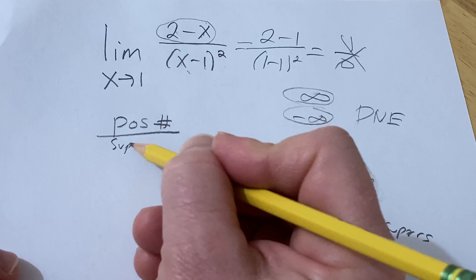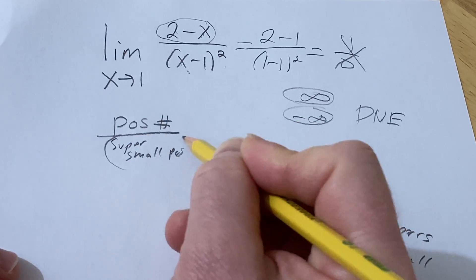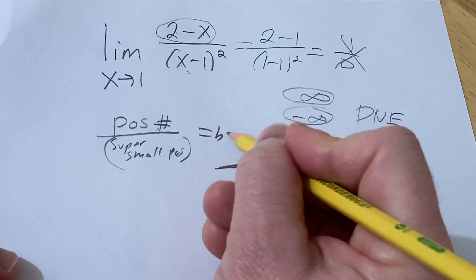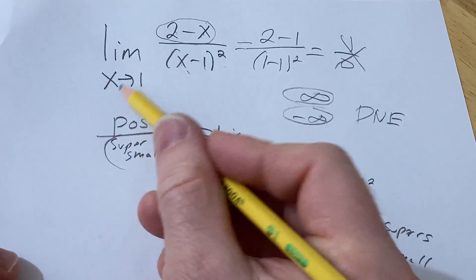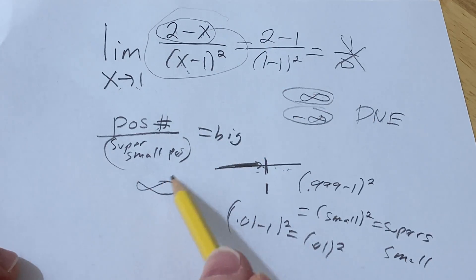So you have a super small positive. So whenever you have a number over a super small number, you get a really big number. So as x gets closer and closer to 1, this fraction gets bigger and bigger and bigger, and so it approaches infinity.